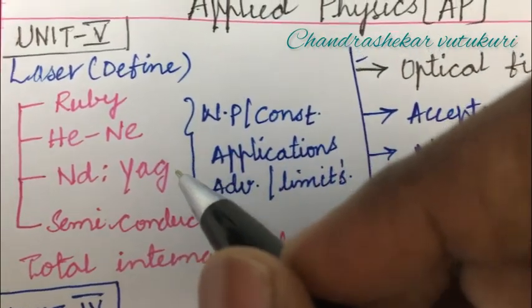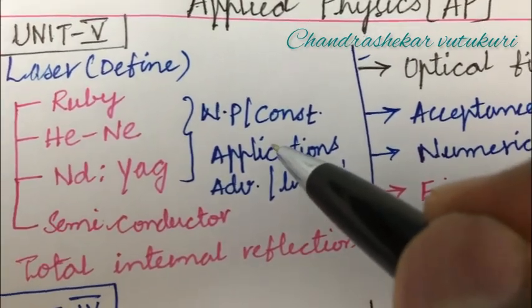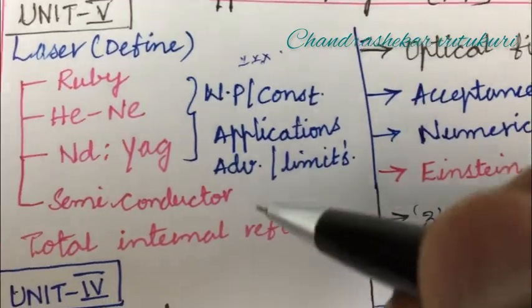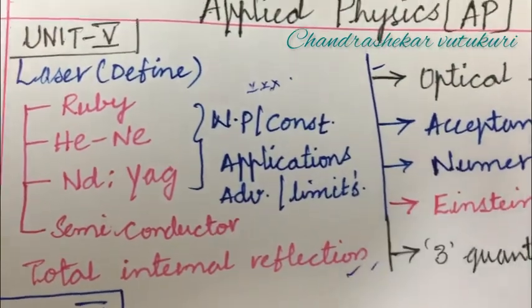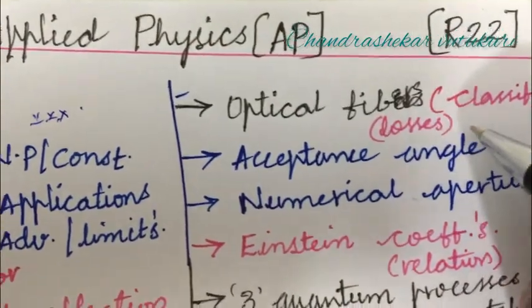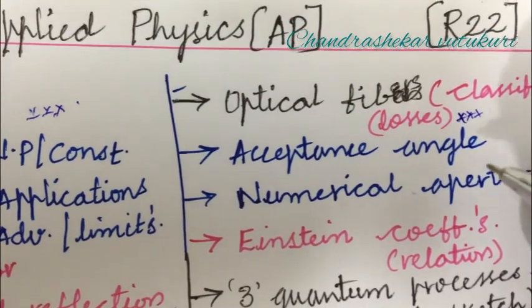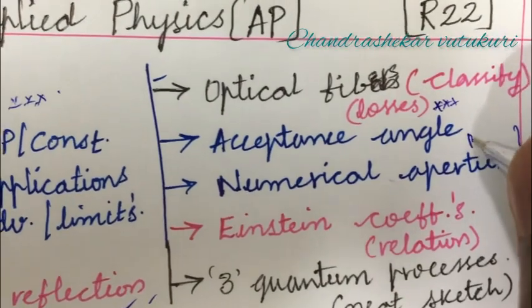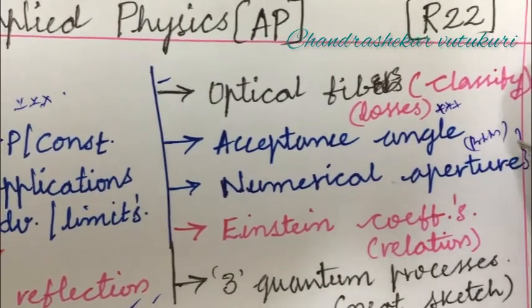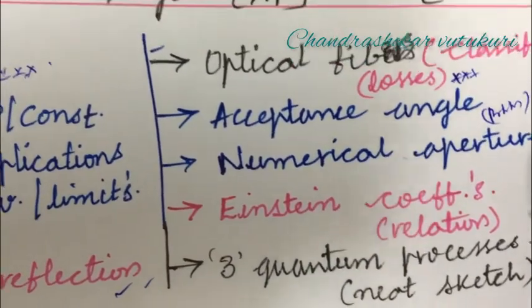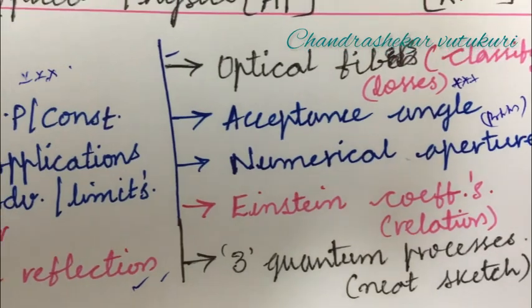Here I am going to let you know both short and long questions. The long question may be from construction and working principle, and the short question may ask for applications or advantages. This is one of the topmost questions. Later, total internal reflection is also an important question. The optical fiber, classification, and losses of optical fiber may be short questions. Acceptance angle and numerical aperture may be short or long questions, along with problems related to this concept. This is a damn sure question. Einstein's equation along with its relations and three quantum processes with neat sketches may also be short or long questions.